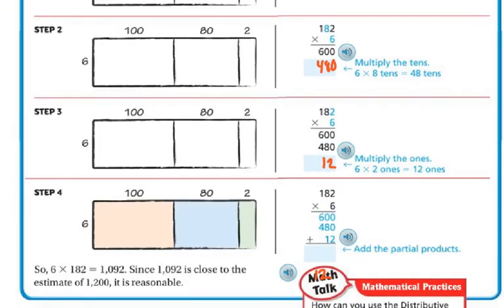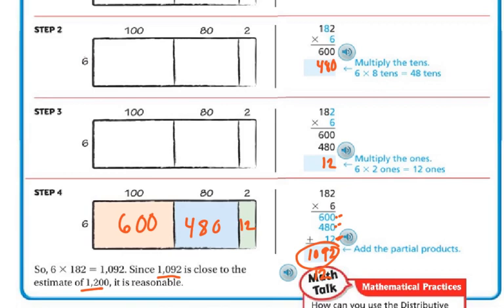So now I'm going to add up all my partial products: 600 plus 480 plus 12, and they're all lined up right here. So 2 plus 0 plus 0 is 2; 1 plus 8 plus 1 is 9; and 6 plus 4 is 10. So my answer is 1,092. And since 1,092 is close to 1,200, my estimate, I know that this number is reasonable.